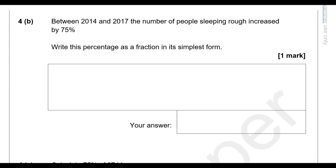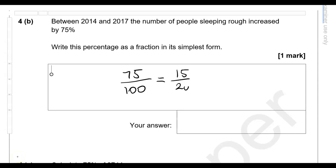Between 2014 and 2017 the number of people sleeping rough increased by 75%. Write this as a fraction in its simplest form. 75% is 75 over 100. Dividing by 5 gives 15 over 20, then dividing by 5 again gives 3 over 4 — three quarters in its simplest form.